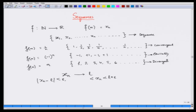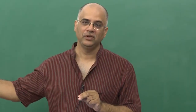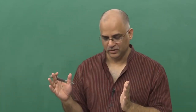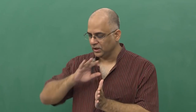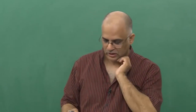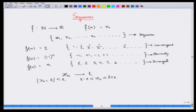So x_n is between L + epsilon and L - epsilon. The idea is: if I give you an epsilon, you have to tell me what is the finite number of elements that you are leaving off. The determination of that finite number of elements is the main thing. Given an epsilon, you have to tell me — if I throw away this finite number of elements from the sequence, the rest are all within this band, so distances are all less than epsilon.